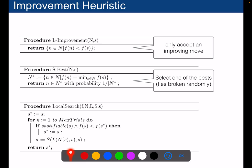You can instantiate this local search procedure with S-best and L improvement, but of course, there are many other possibilities to implement L and S.